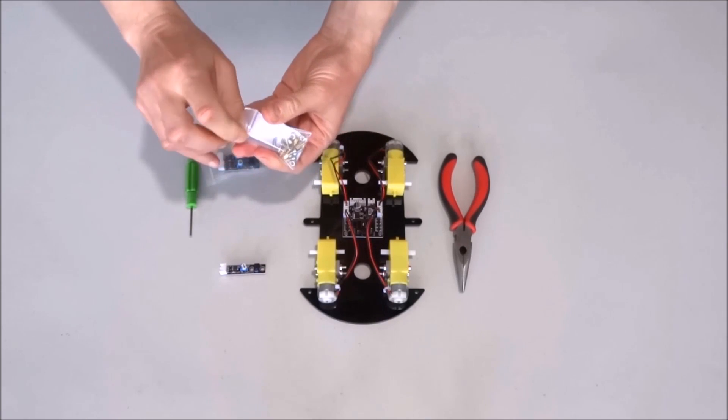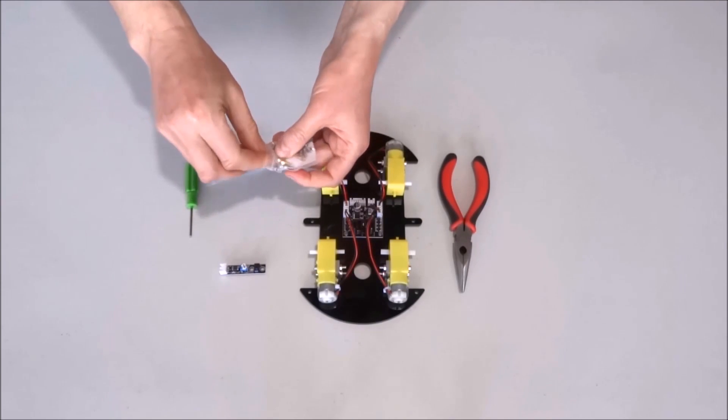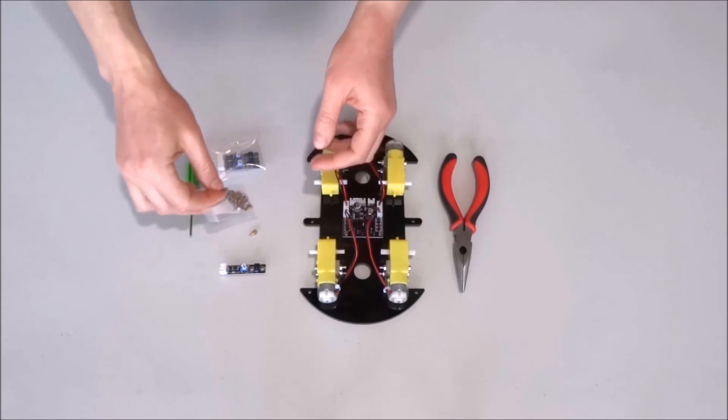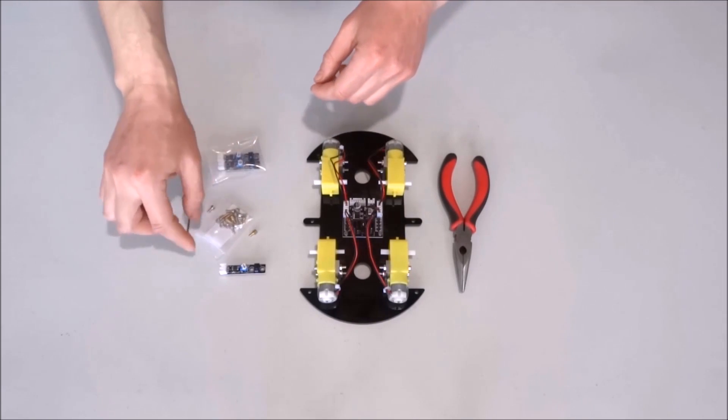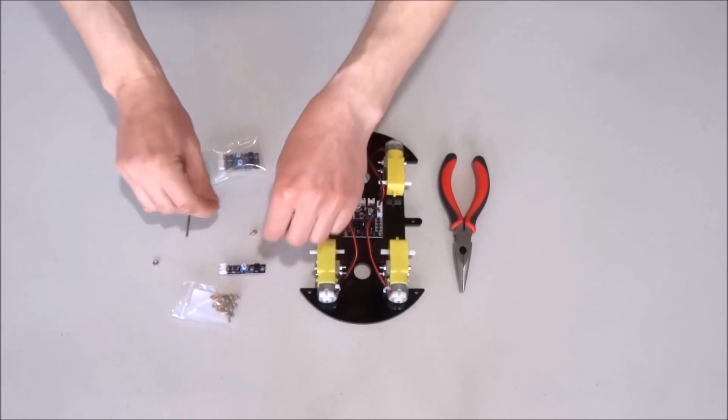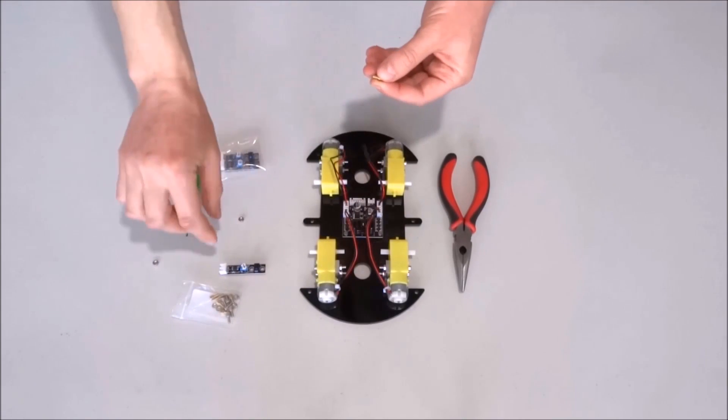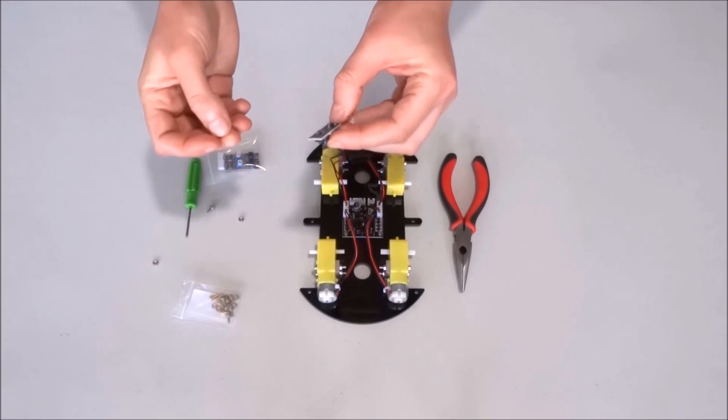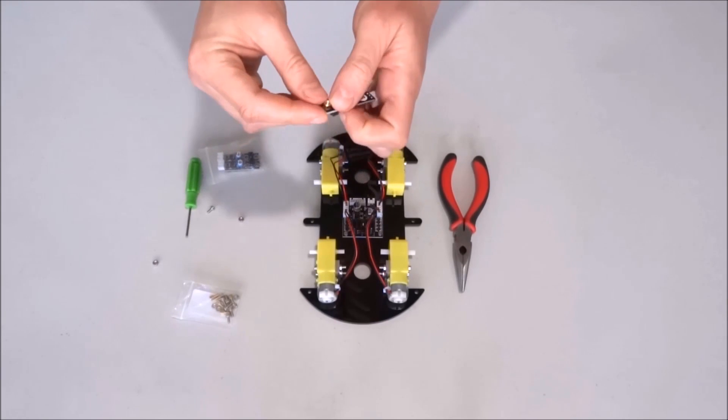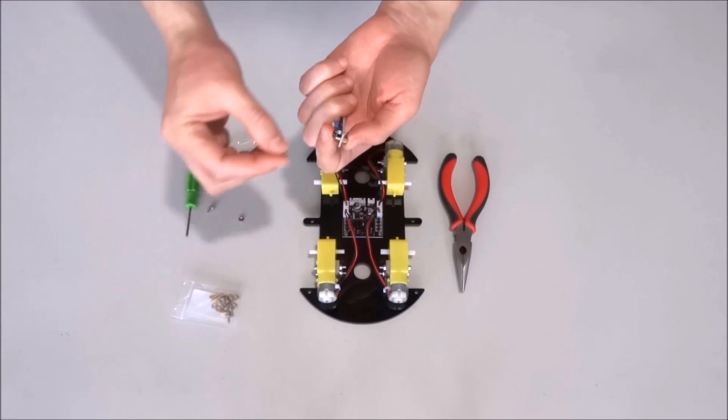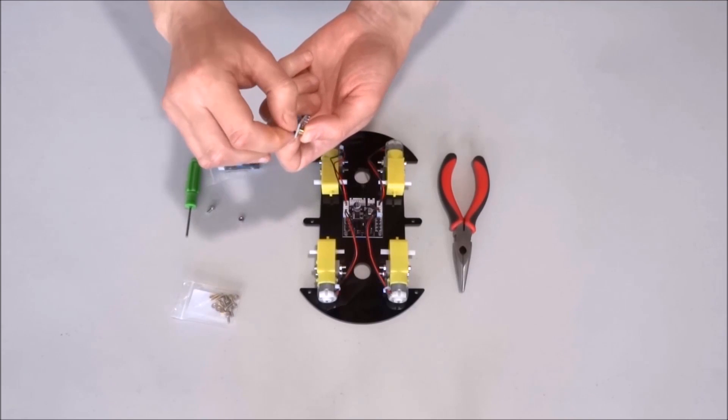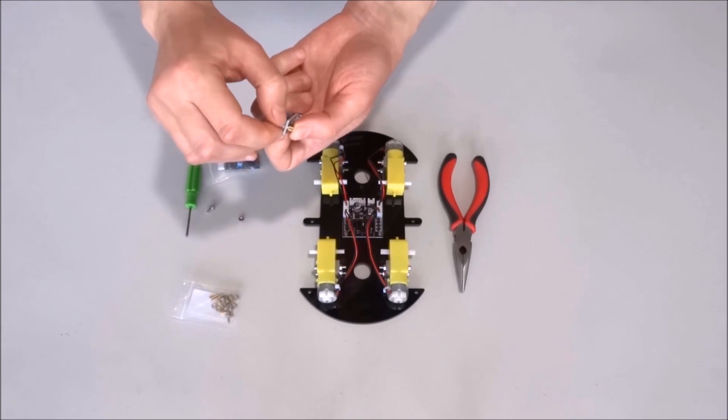And we'll use one of the copper spacers with corresponding screw and nut. Take the sensor and insert the spacer from underneath the sensor, then tighten with the nut.